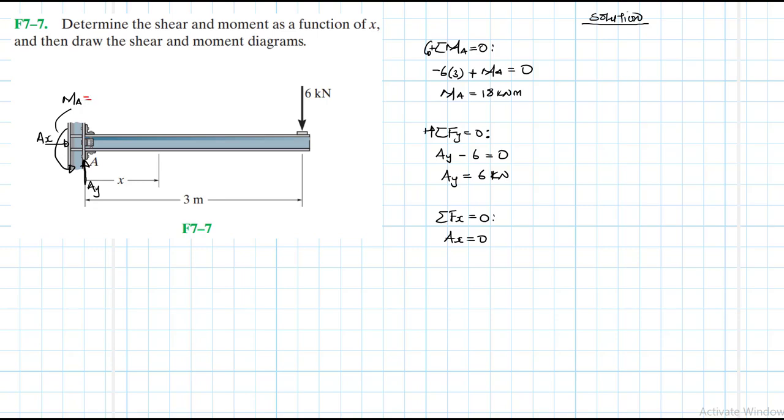Therefore our MA is just going to be equal to 18 kilonewtons meter. So we can replace these values. We have moment of 18 in the same direction, and then we have Ay of six in the same direction, and then we have Ax of zero.